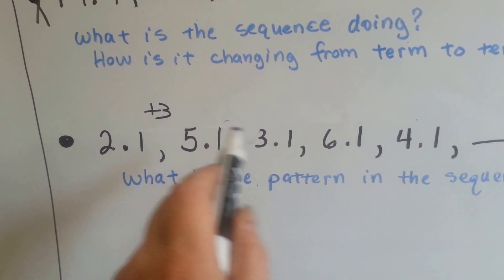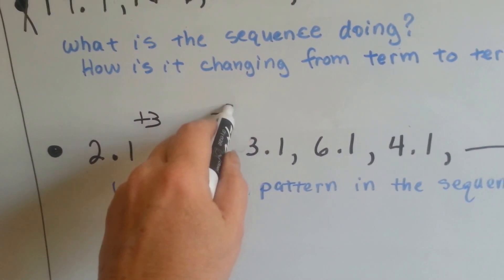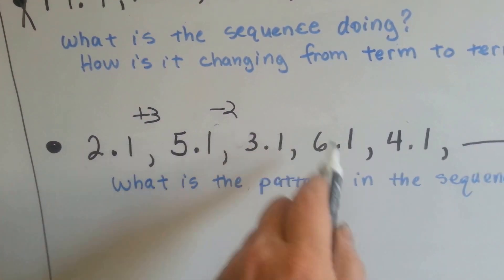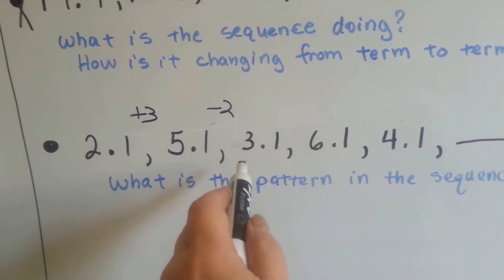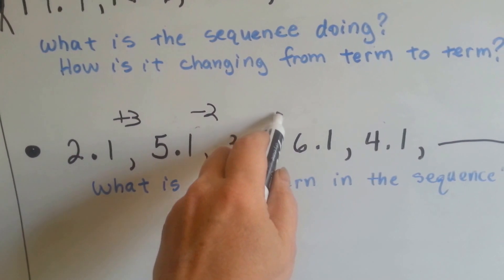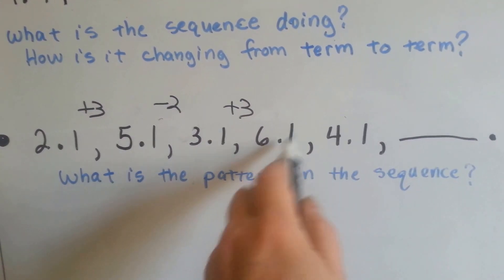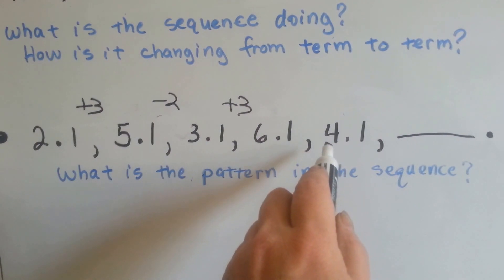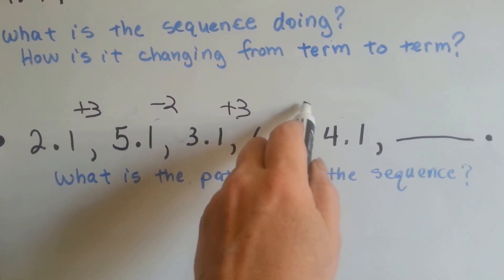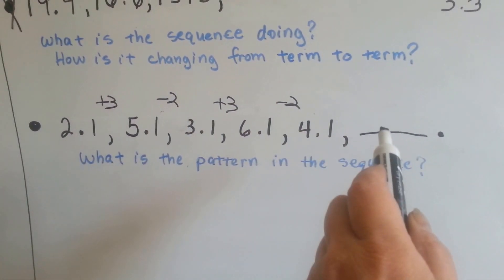So it went down by 2 whole, didn't it? Now what did it do? From 3 and 1 tenths to 6 and 1 tenths. It increased by 3, didn't it? Now what did it do? 6 and 1 tenths to 4 and 1 tenths. Well, if you said it went down by 2 again, you're right.